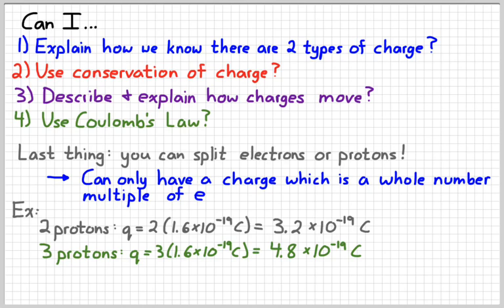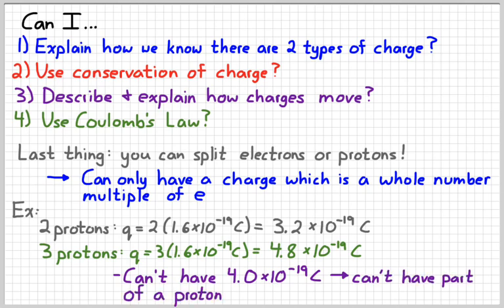So those are values of charge which are actually possible. You cannot have a value that's in between. You can't have 4 times 10 to the negative 19 Coulombs, because that would suggest that you have a fraction of a proton. And you can't divide up a proton into anything simpler. So I just want to make sure that I snuck in that real quick reality check there.